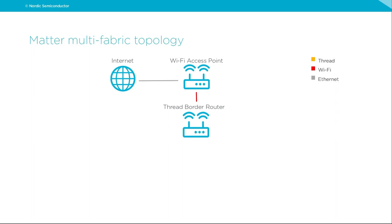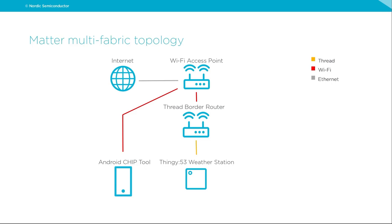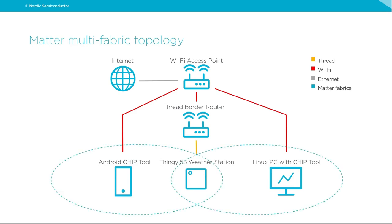Some parts of the network topology will be the same as for the previous demo — a Wi-Fi access point with internet access and a Thread border router. This time we are going to use an Android smartphone with the chip tool application as a Matter controller. The Matter accessory will be the weather station application running on the Nordic Thingy53 sensor kit. We will also join another Matter controller — chip tool on Linux PC — creating two separate Matter fabrics, just like two different ecosystem providers. We will prove communication with the weather station is possible from both fabrics.